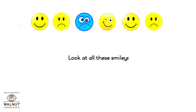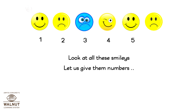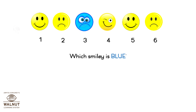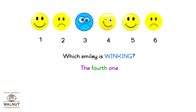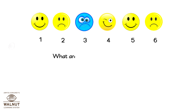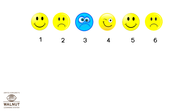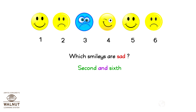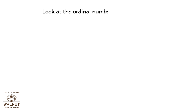Look at all these smileys. Let us give them numbers: 1st, 2nd, 3rd, 4th, 5th, 6th. How many smileys do we have? 6 smileys. Which smiley is blue? The third one. Which smiley is winking? The fourth one. What are the first and the fifth smileys? They are the happy smileys. Which smileys are sad? The second and the sixth one are sad.